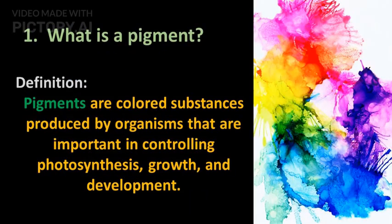So what's a pigment? Simply put, pigments are colored substances produced by organisms that are important in controlling photosynthesis, growth, and development.